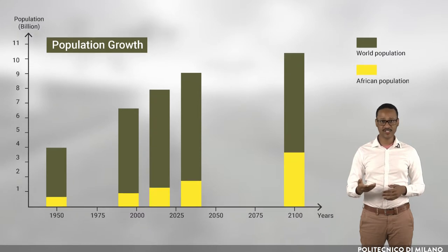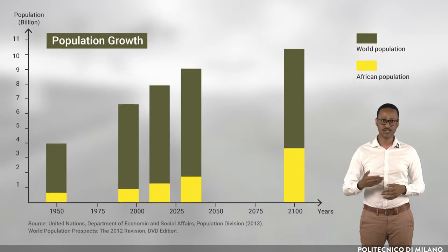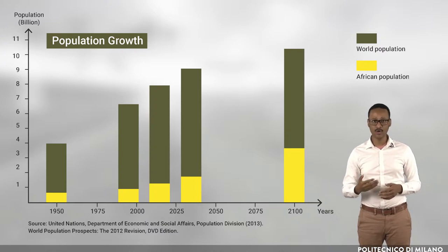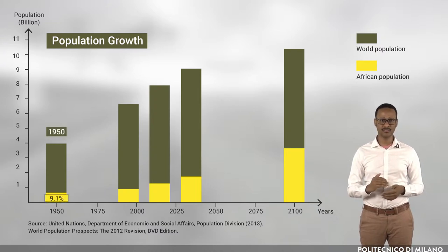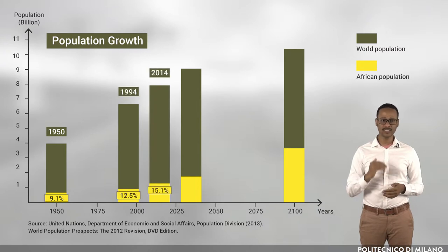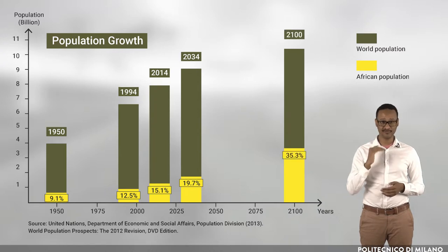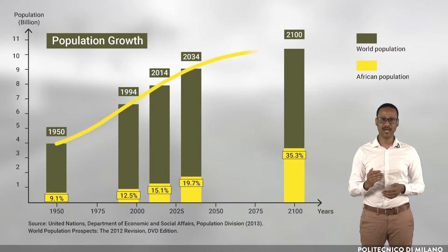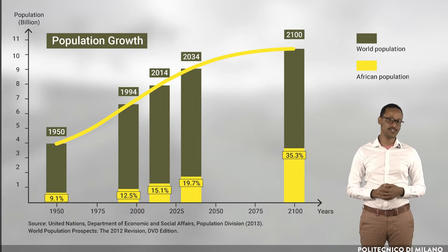According to the United Nations Department of Economic and Social Affairs, the African population share in the global population will grow from 9.1% in 1950 to 19.7% in 2034, and up to 35.3% in 2100. This is a challenge calling for active planning to feed this growing population.